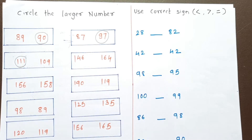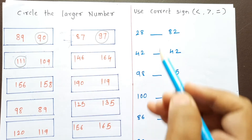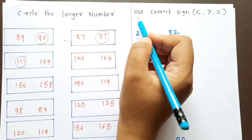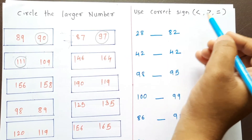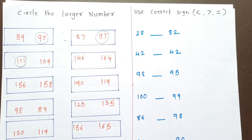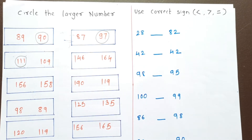In our next worksheet, use the correct sign: greater than, less than, or equal to. We will compare the numbers. Greater means the bigger number, less than means the smaller number, and equal means the numbers are the same.